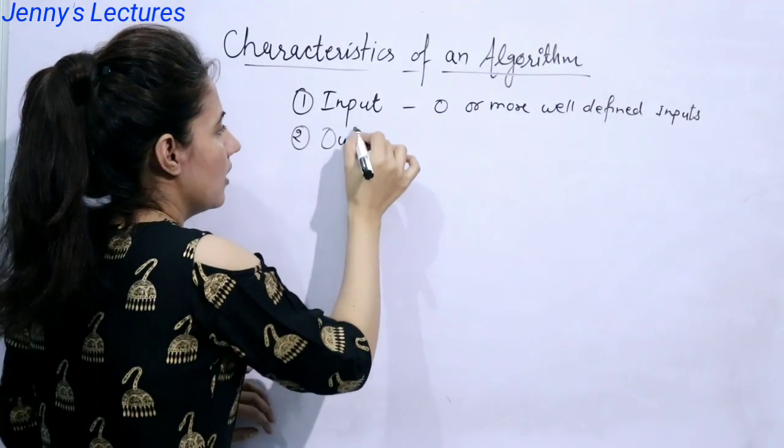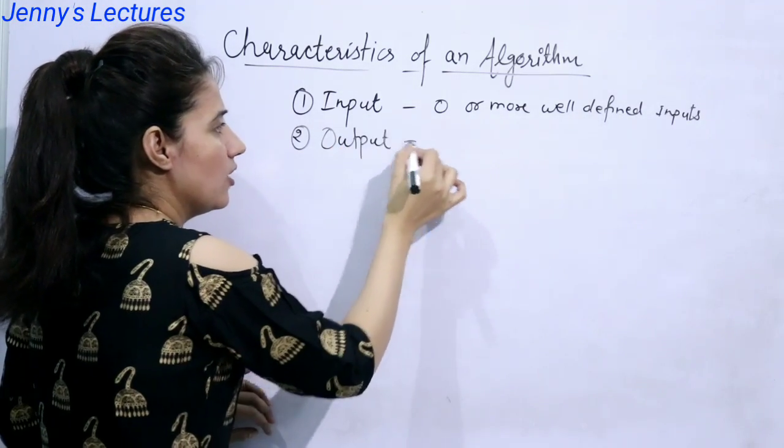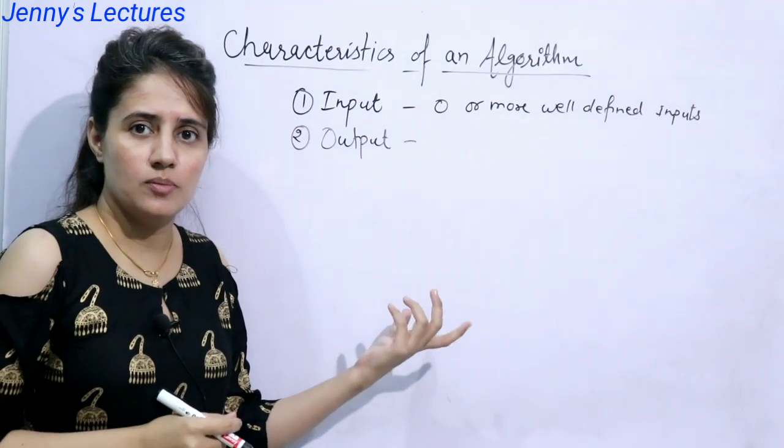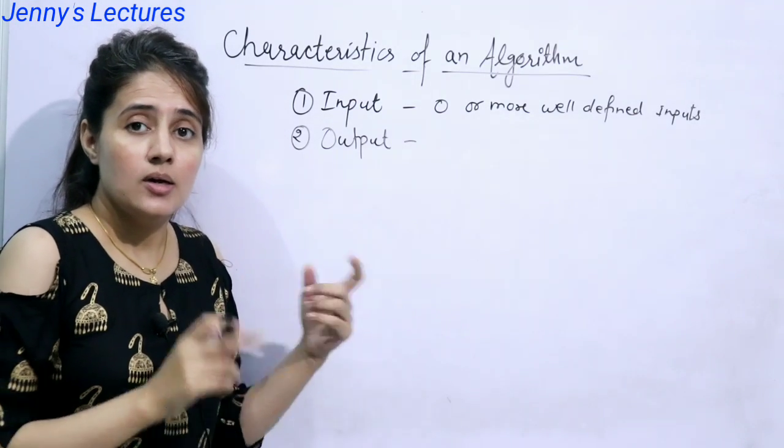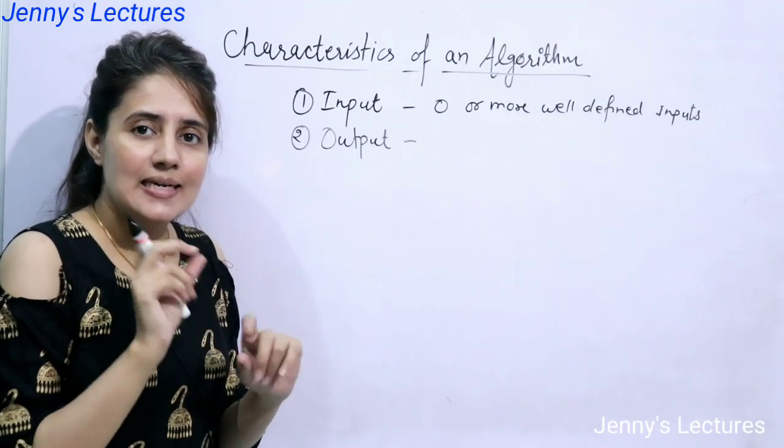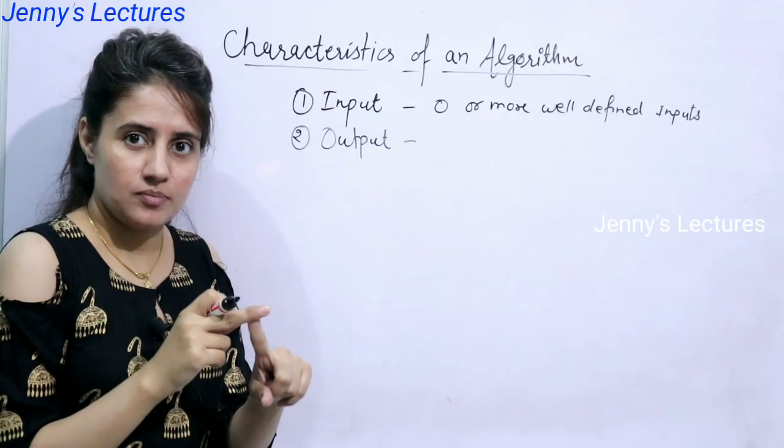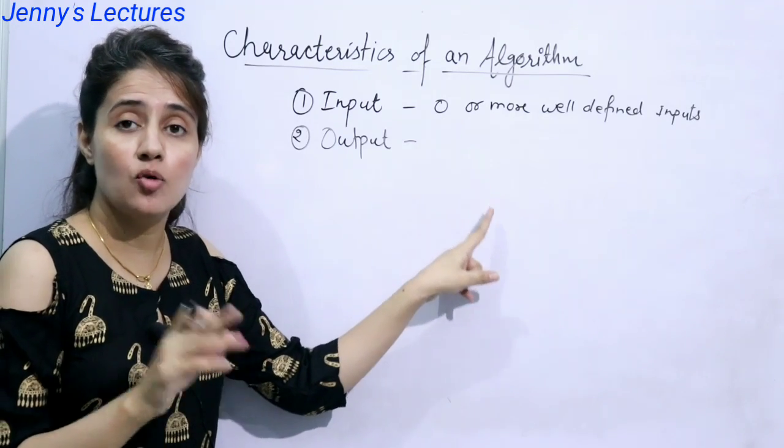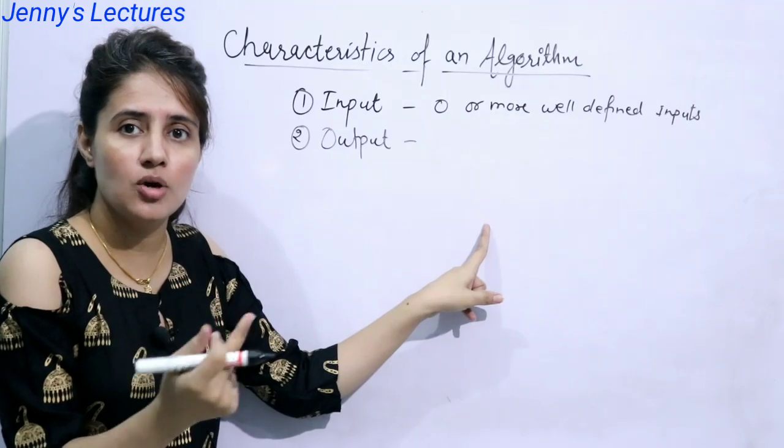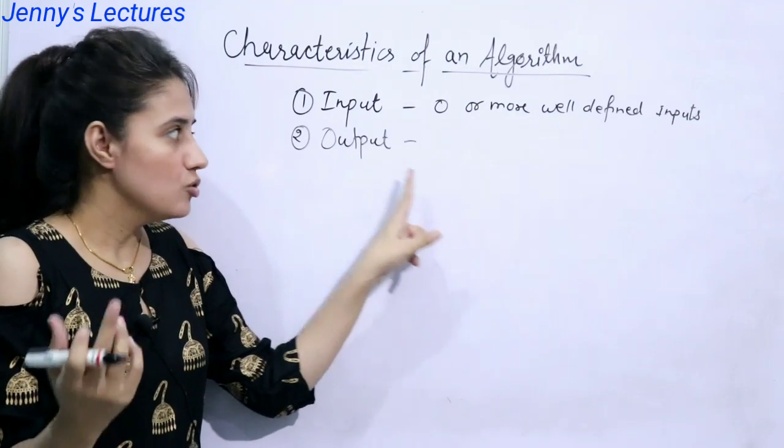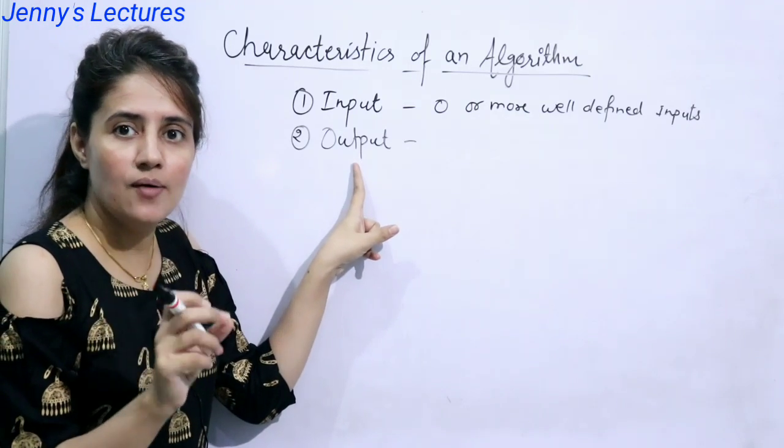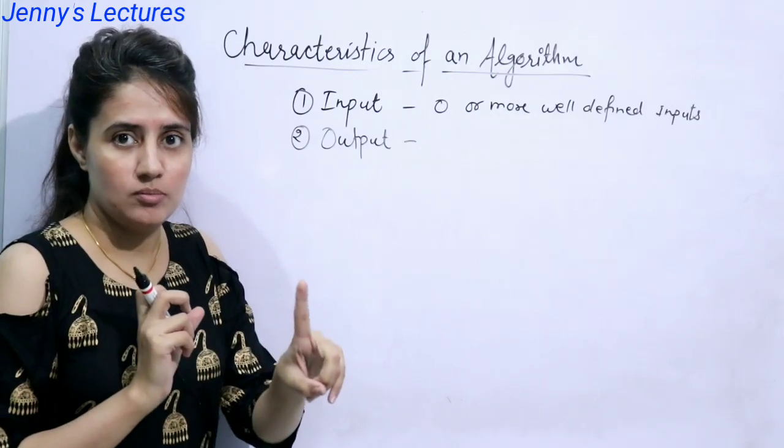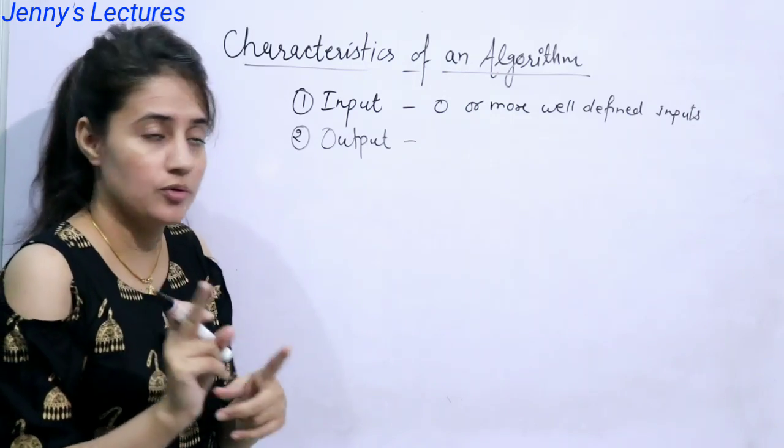Second one is output. So we cannot say that algorithm can have zero output means no output would be there. No, algorithm should have at least one output. Maybe input may be zero. Like in hello world, input is nothing, but output is yes, one output is there you are printing hello world. So an algorithm should have at least one output. Maybe more than one output can be there, but at least one output.